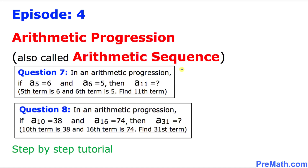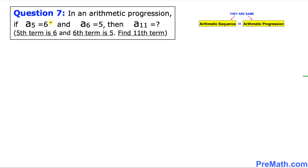Welcome to PreMath. In this video tutorial our topic is arithmetic progression, which is also called arithmetic sequence. We will be covering question number 7 and question number 8 in this video tutorial. In an arithmetic progression if a(5) equals 6 and a(6) equals 5, then a(11) equals how much?